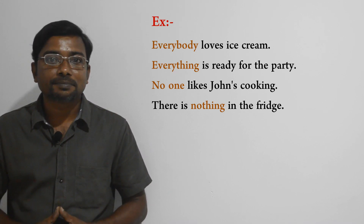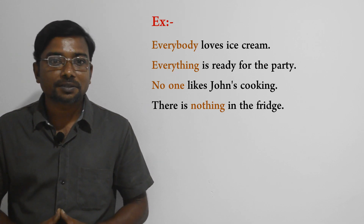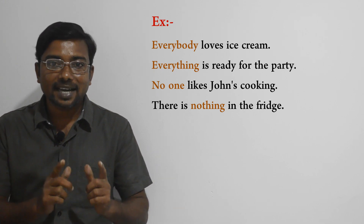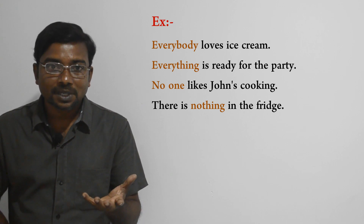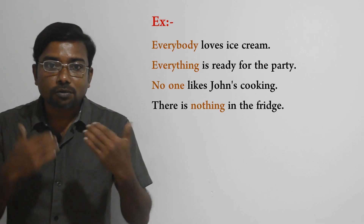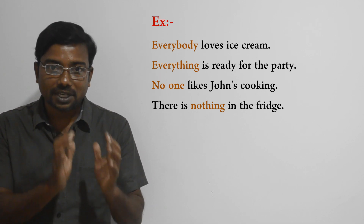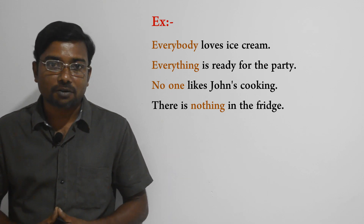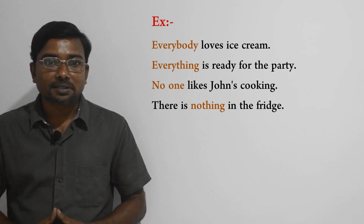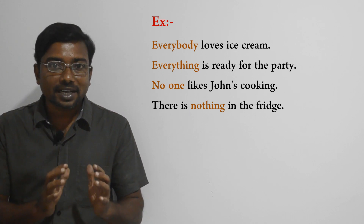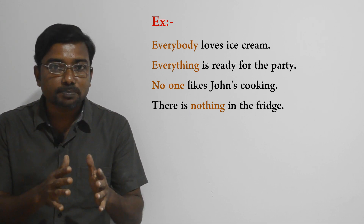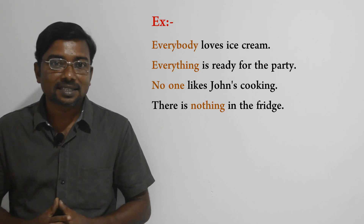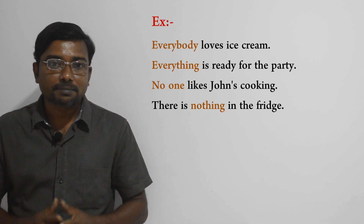More examples: 'Everything is ready for the party.' 'No one likes John's cooking.' 'There is nothing in the fridge.' In the first example, 'everybody loves ice cream,' everybody acts as an indefinite pronoun because it refers to an unspecific group of people. It also acts as a singular indefinite pronoun because it follows the singular verb form 'loves.' In the second example, 'everything is ready for the party,' everything refers to unspecific things and follows the singular verb form 'is.'